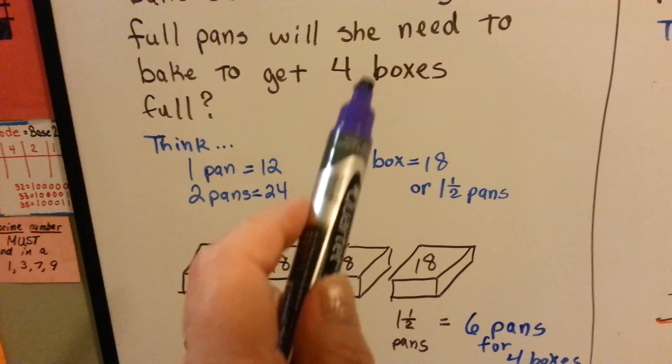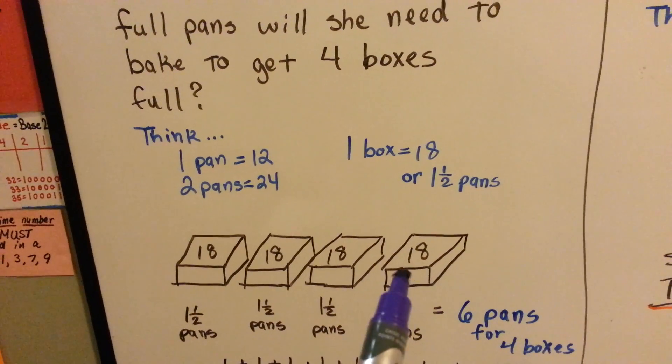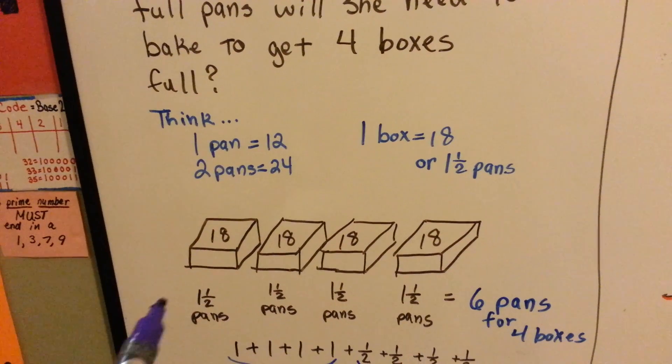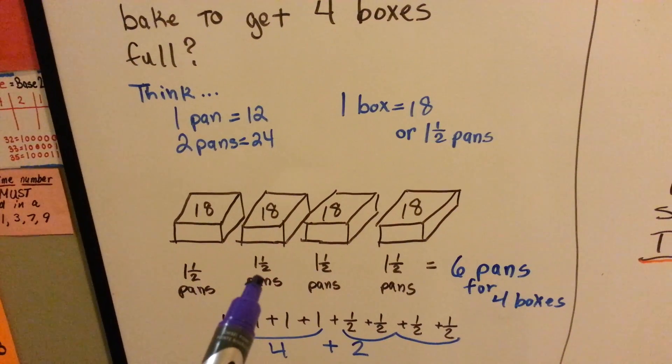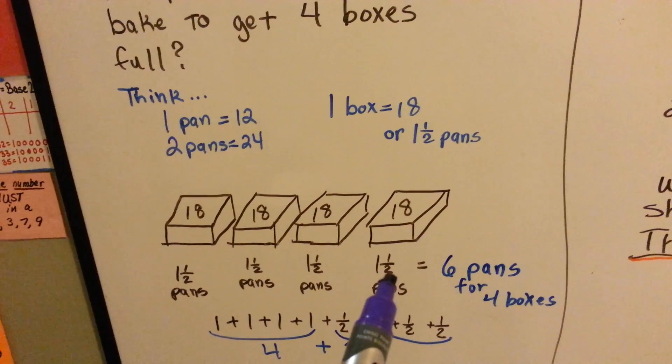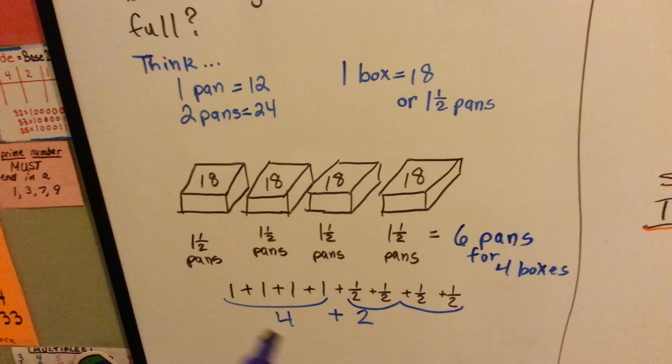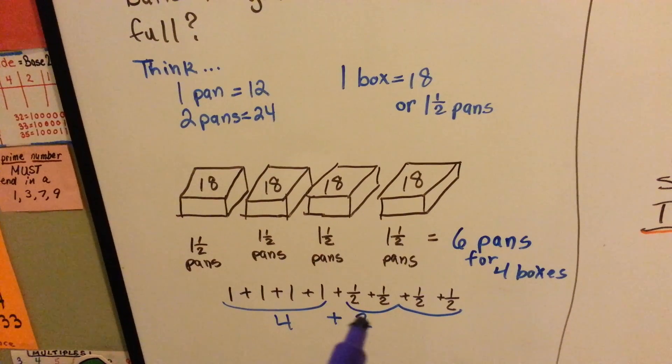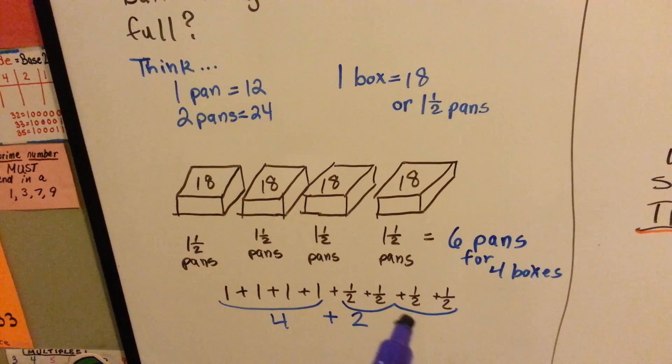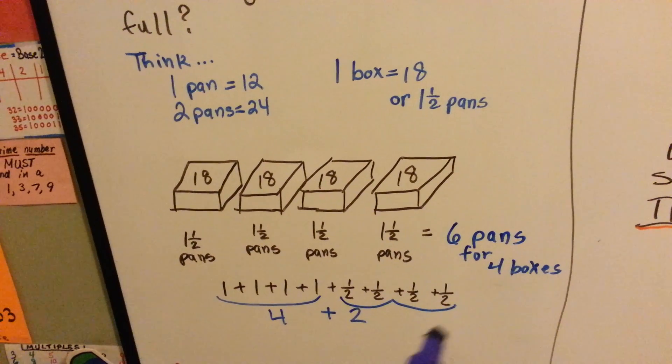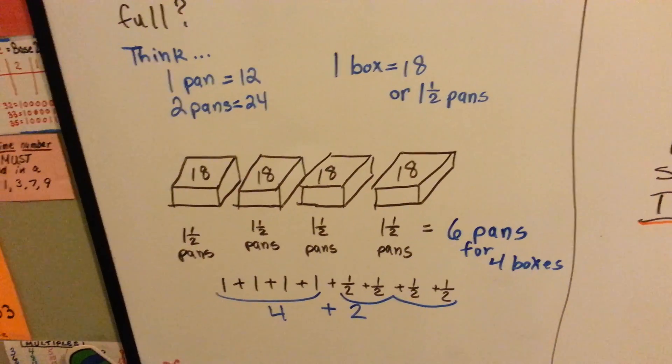If I need 4 boxes, I'm going to have to do this 4 times. 1 and a half plus 1 and a half plus 1 and a half plus 1 and a half. We add the 1's, 1, 2, 3, 4. We add the 4 halves. That makes 1 whole. And those 2 make 1 whole. We have 4 plus 2, which is 6 pans for 4 boxes.